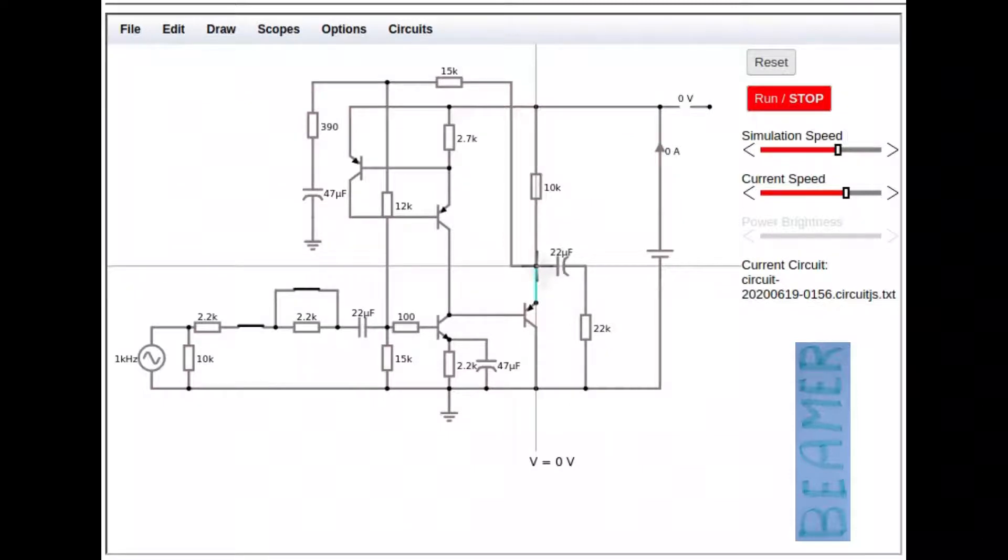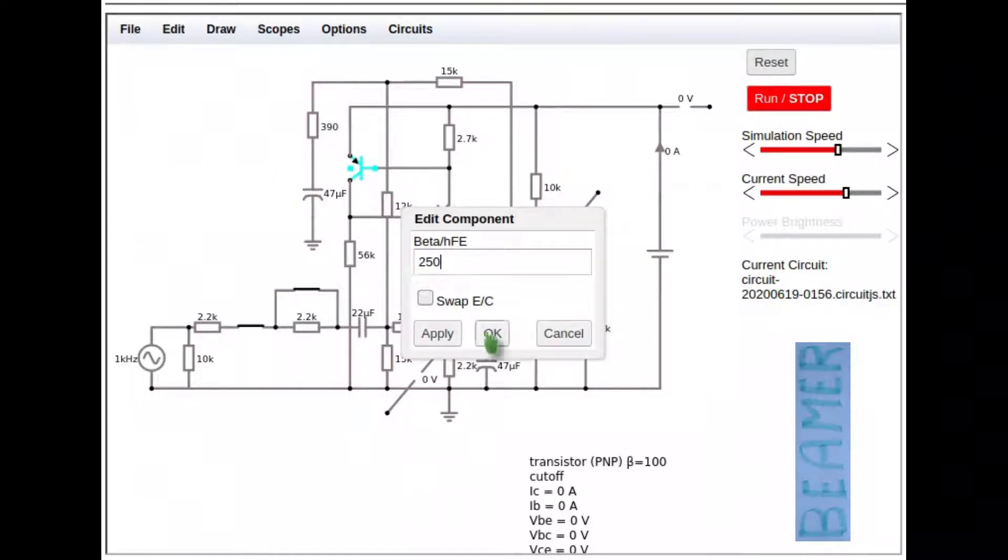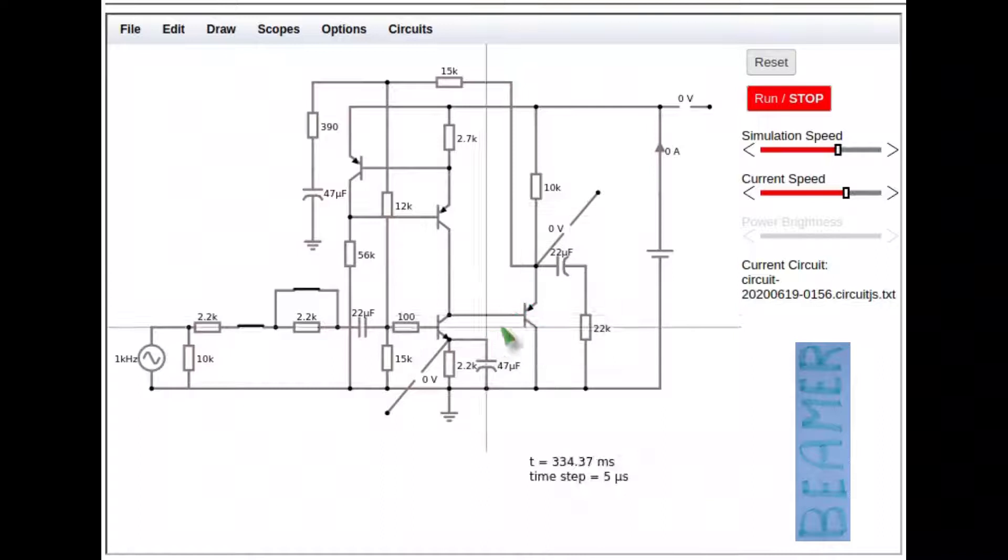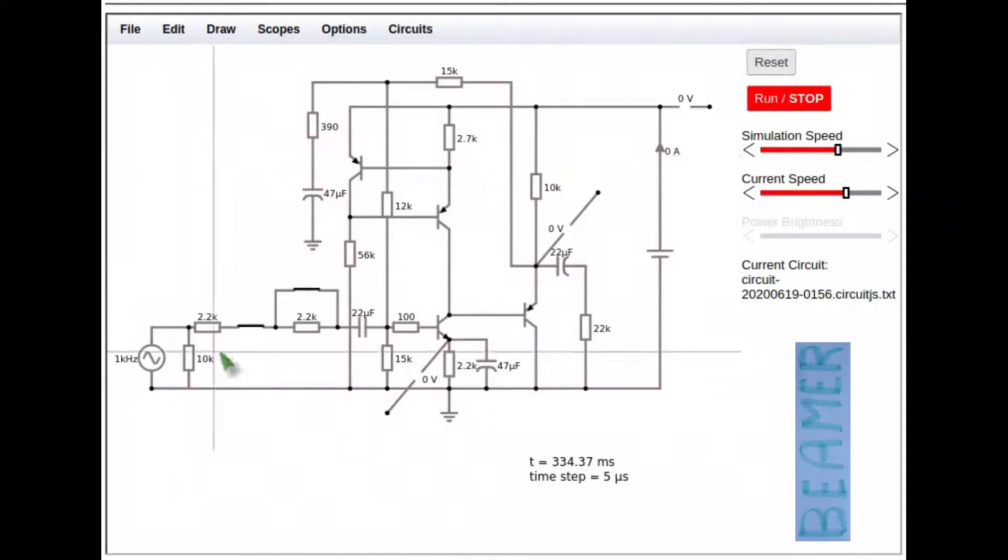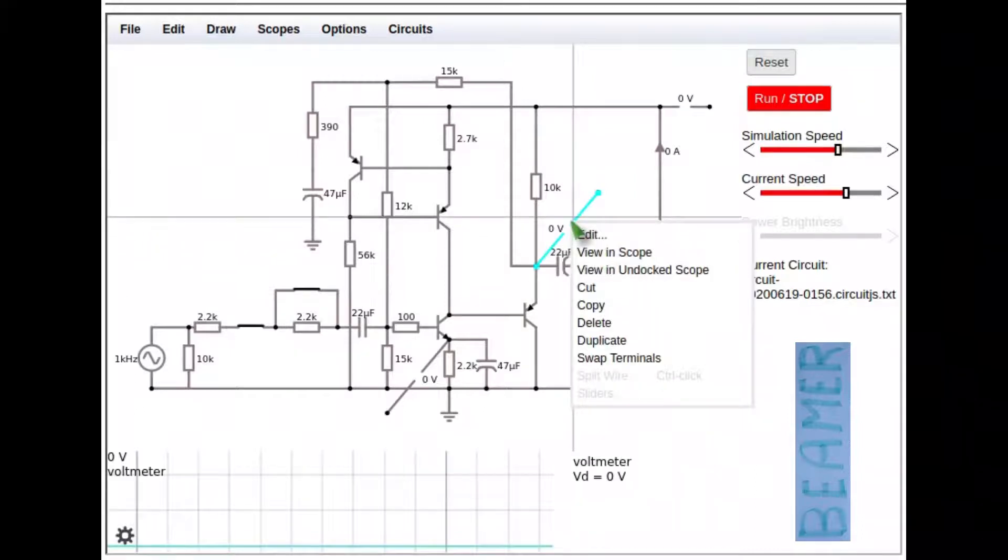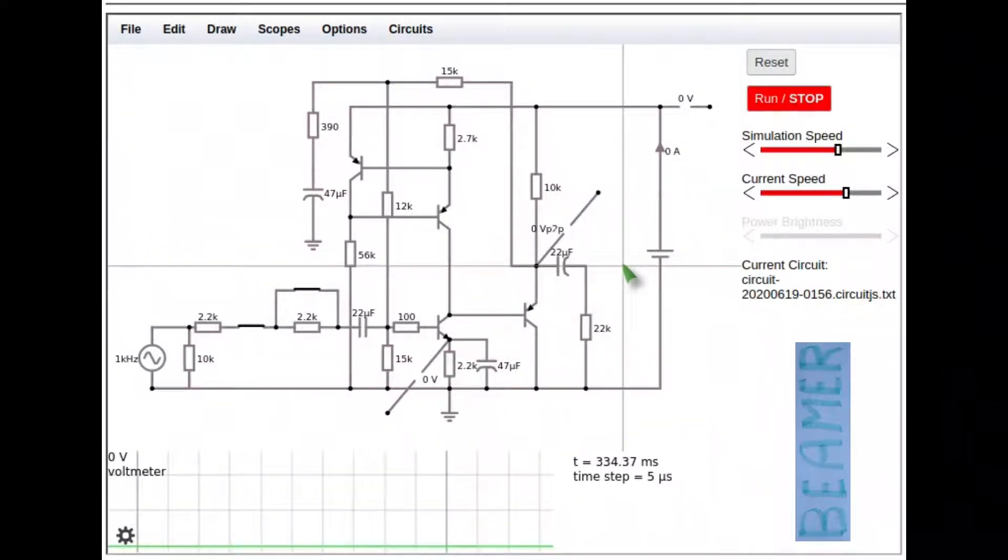The negative feedback has 15K from the output down through to 12K, which goes through to the base of the NPN transistor, the first transistor I put down. You've also got at the junction of the 15K and the 12K a 390 ohm resistor going to the 47 microfarad capacitor, which goes down to ground. That controls the gain of the overall circuit. What I'm doing now is changing the HFE characteristics of all transistors to 250 from 100. This has been checked on my transistor tester and all the transistors I've put in here.